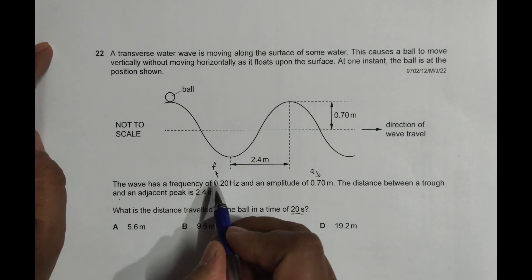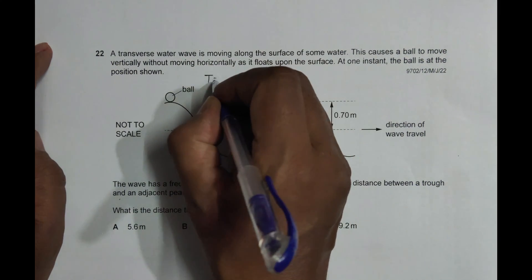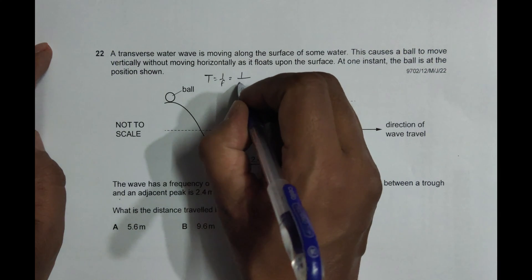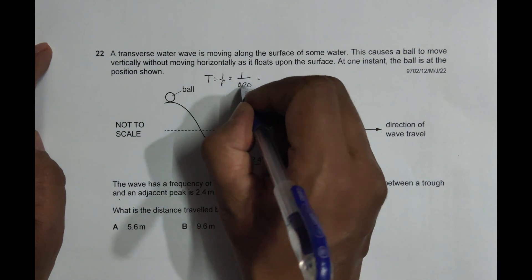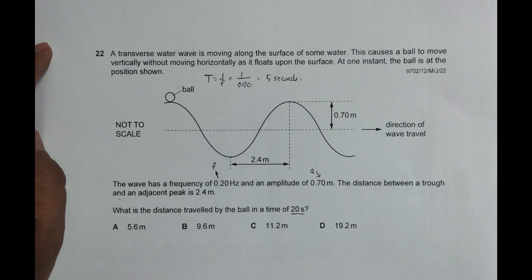First of all, from this value of frequency, I need to find the time period, because timing is concerned here. The time period is equal to 1 by f, that's equal to 1 by 0.20, which equals 5 seconds.